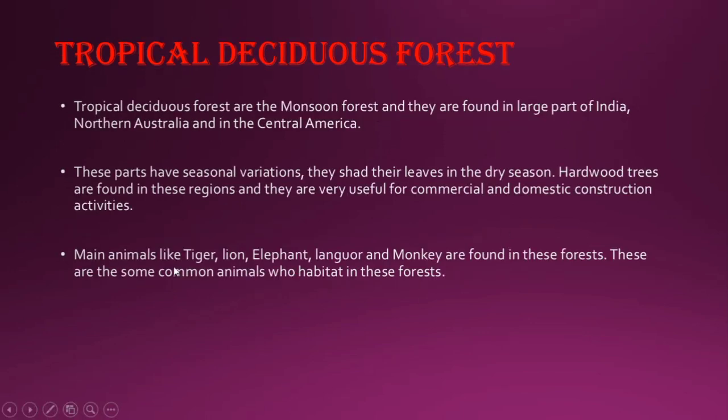Now let's talk about the tropical deciduous forest. These are forests which are also called the monsoon forest, and they are found in a large part of India, northern Australia, and central America.